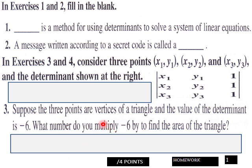This is part B of your number three: Suppose three points are vertices of a triangle and the value of the determinant is negative six. What do you multiply negative six by to find the area of a triangle? Then put your response here or up here.